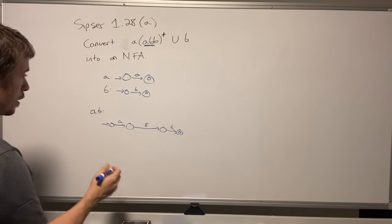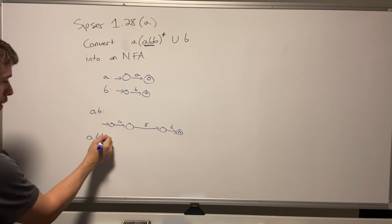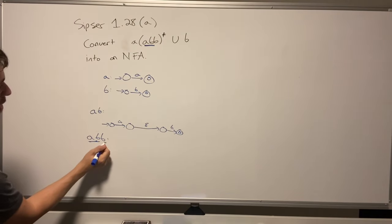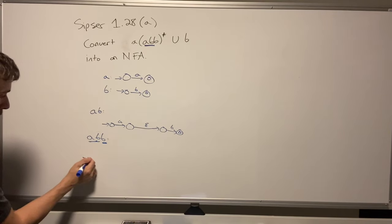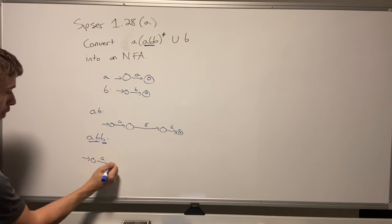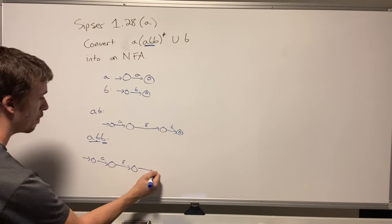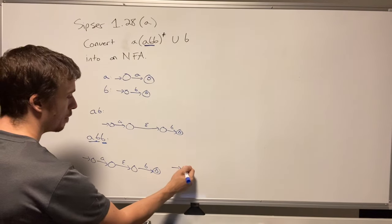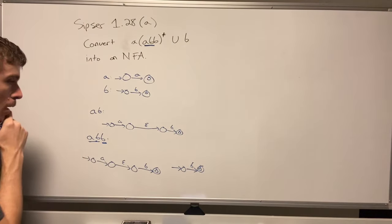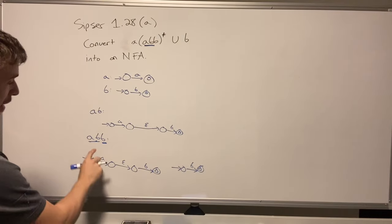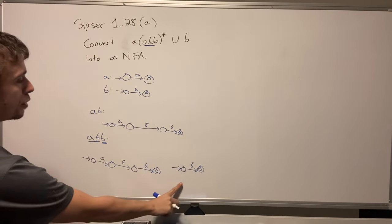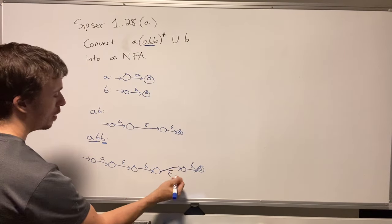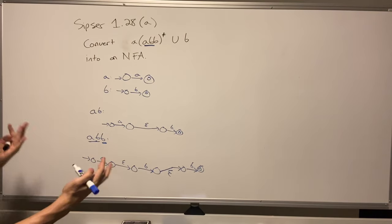For 'abb', this is just the 'ab' machine concatenated with another 'b'. So I copy and paste the 'ab' NFA — which has an epsilon transition inside — as the left half, then add a 'b' machine as the right half. Again, I connect every final state of the first half to the start state of the second half using an epsilon transition, making the first half's final state non-final.